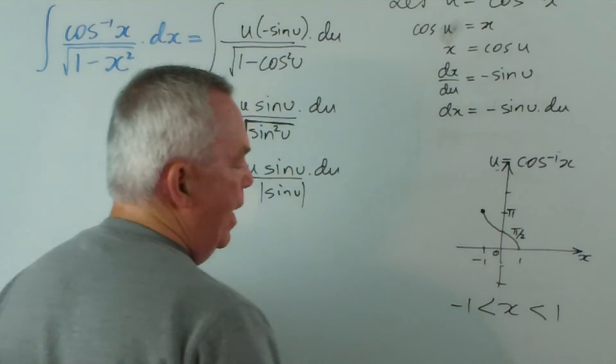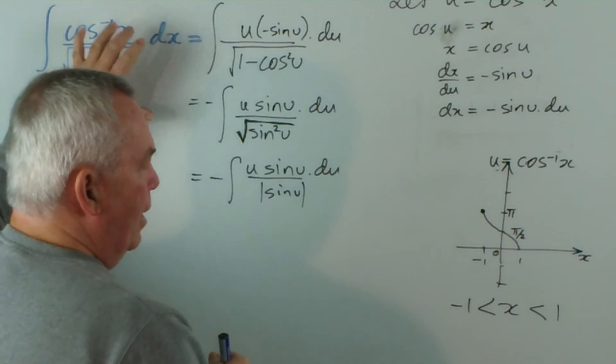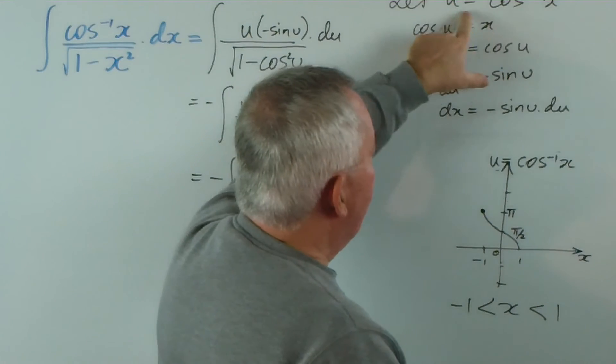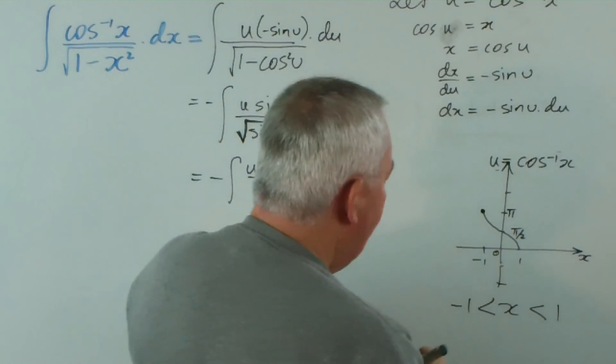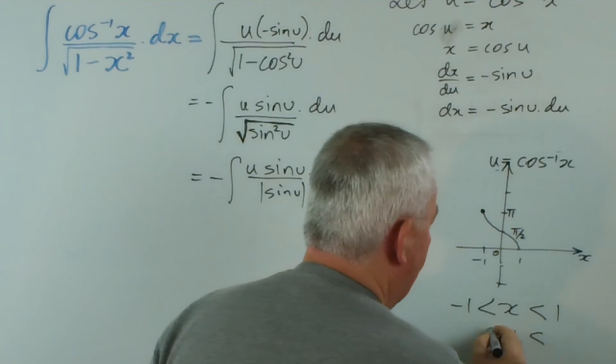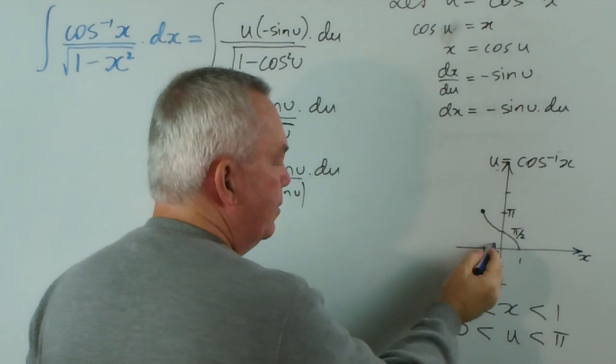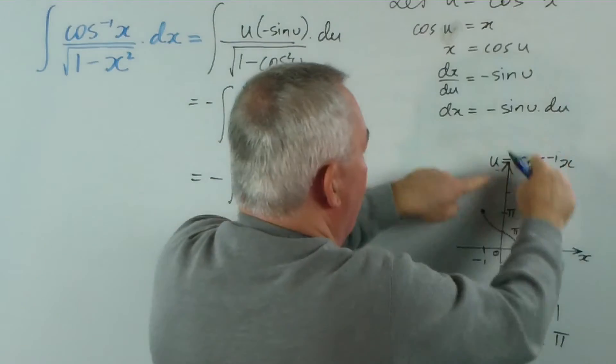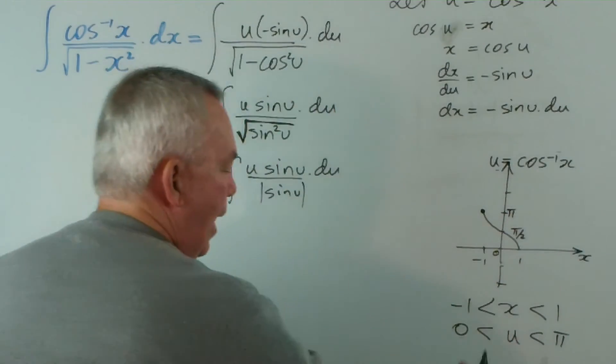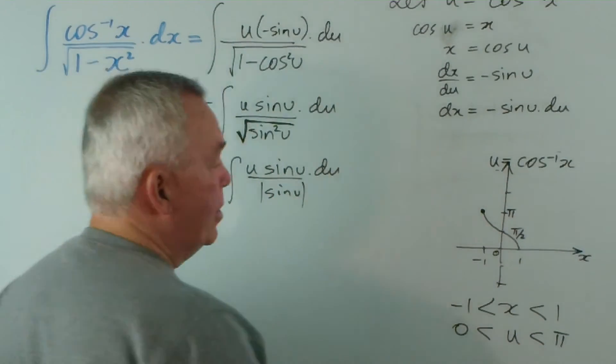In this domain for x, which is what we have with the original function, when we make this substitution—when u is the inverse cosine of x—you can see that the domain for u is between zero and pi, because this is the substitution that we made. And in this domain for u, what is sine u? Well if we graph sine u...